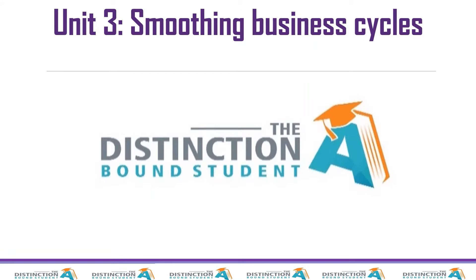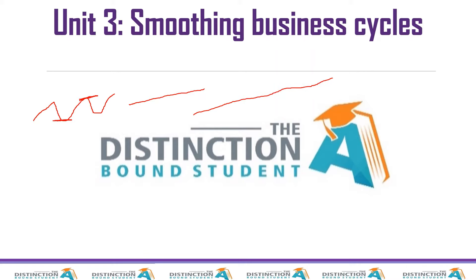We're moving on now to unit three. The previous unit was causes of business cycles. In this unit, since our economy does not just grow smoothly — since we have these ups and downs — how do we make it as smooth? How do we deal with these?